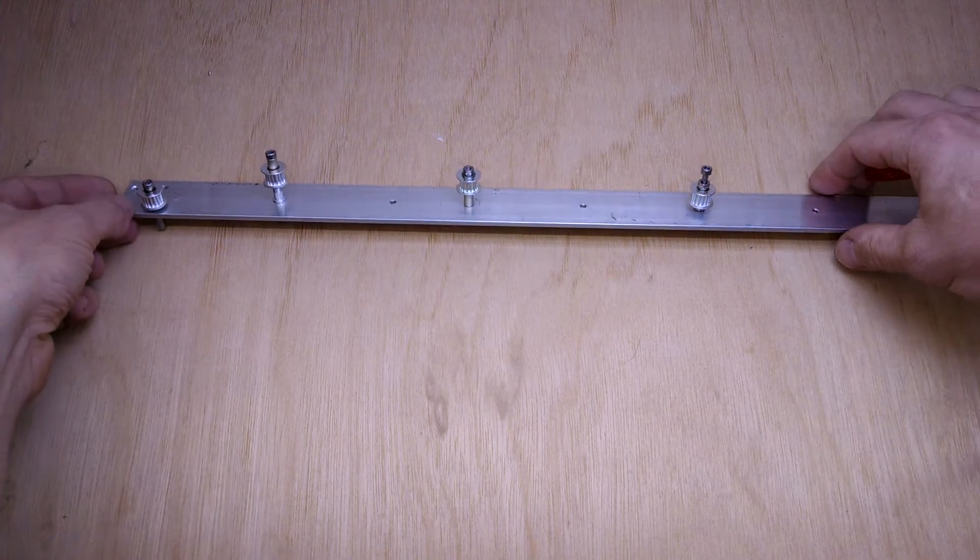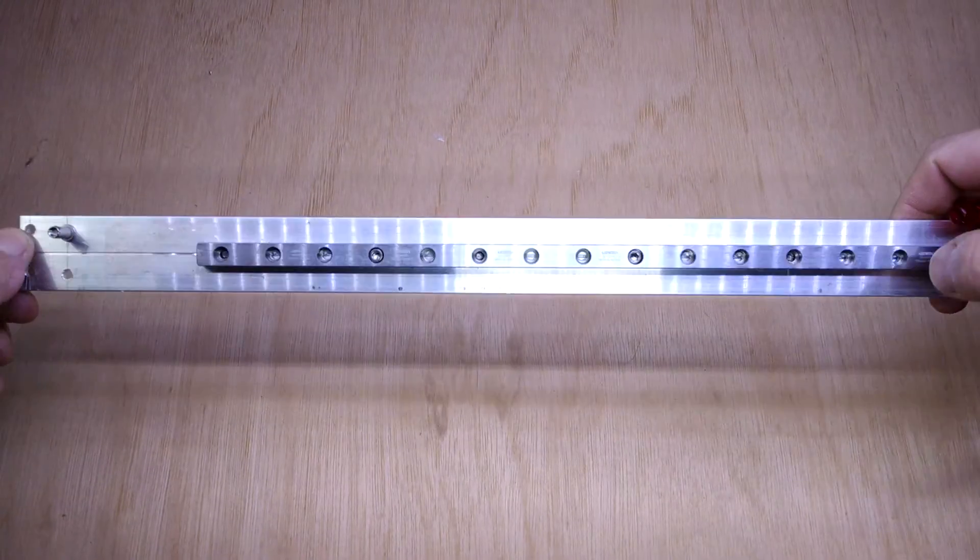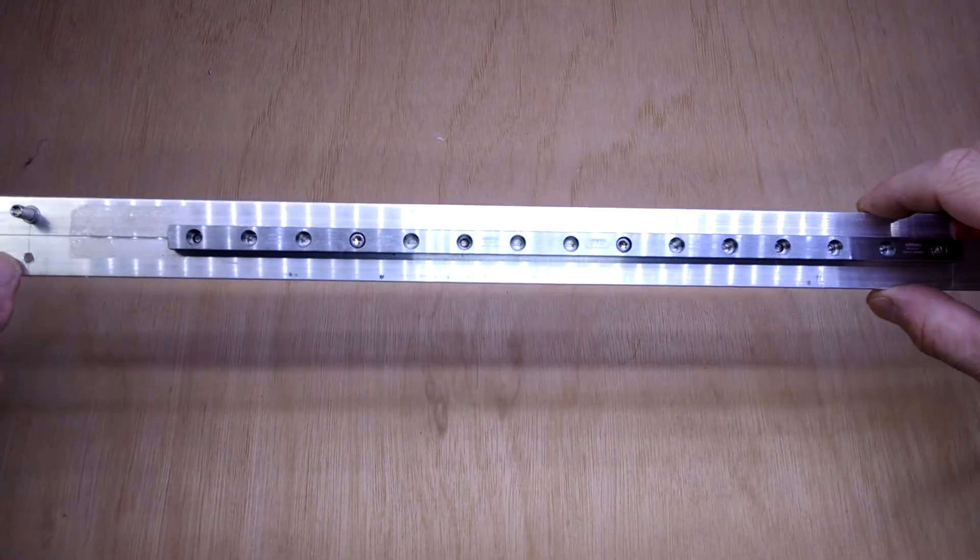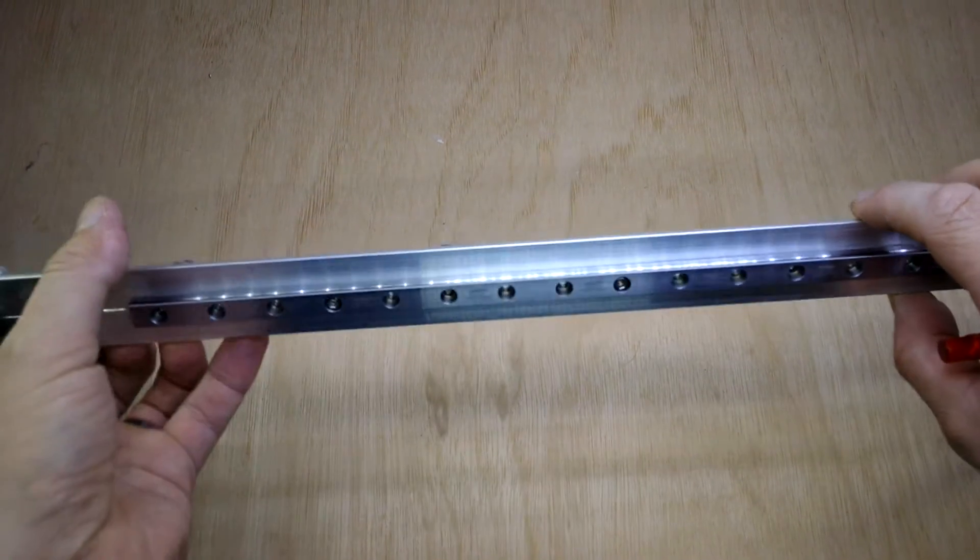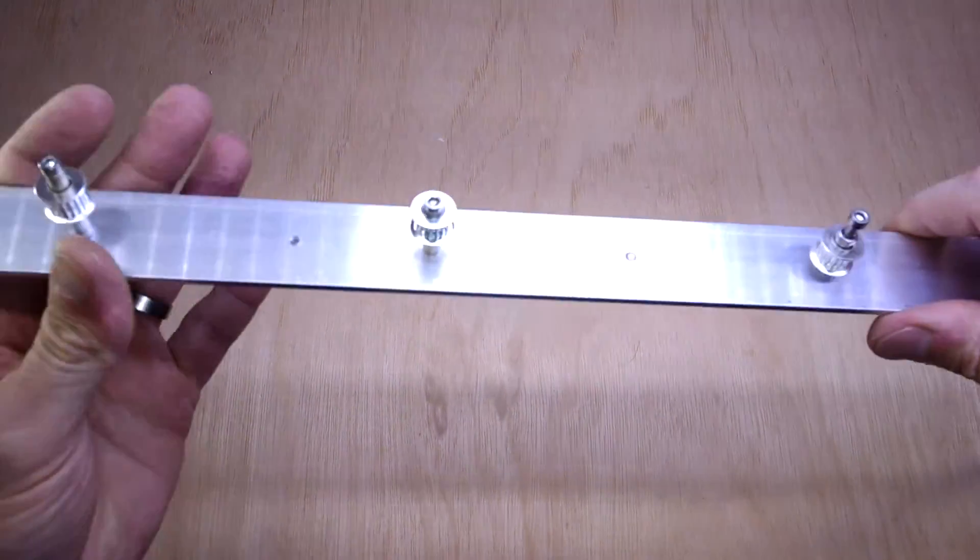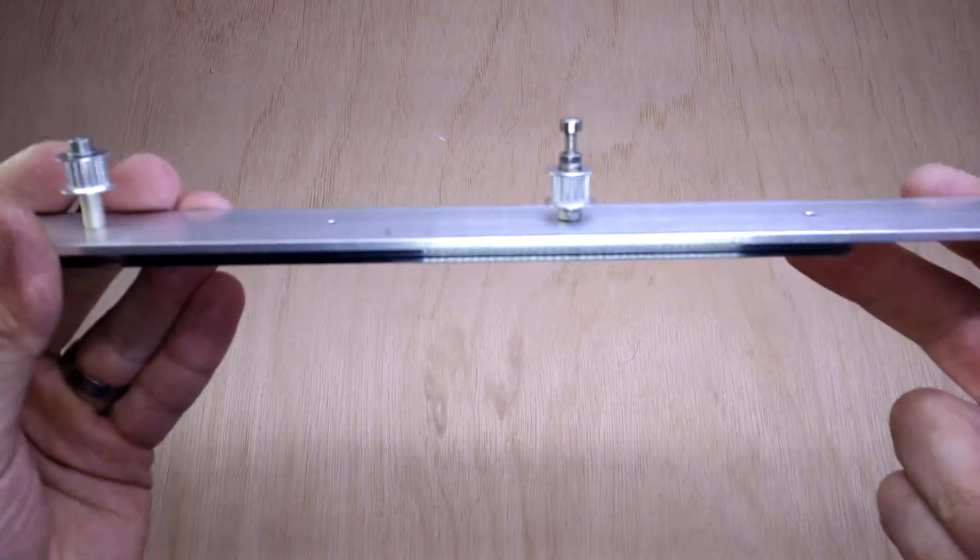So here you can see how I've got some of these mounted. This is just because I've got a load of M3 holes cut into this aluminium flat. So it was a convenient place to mount them and show you.